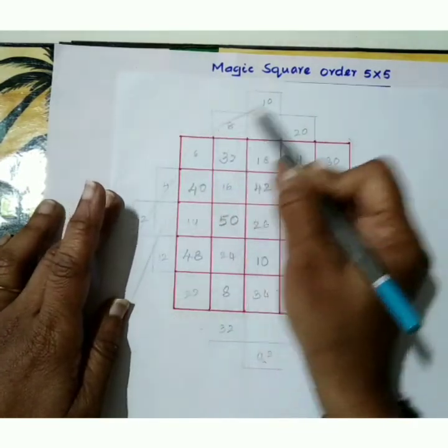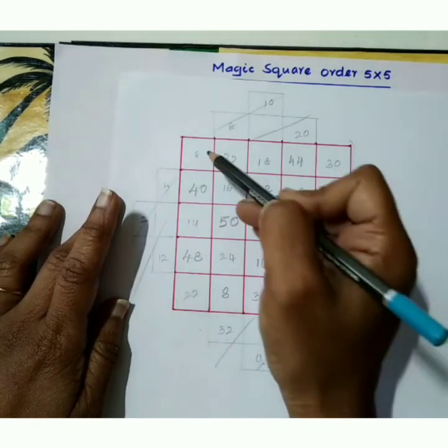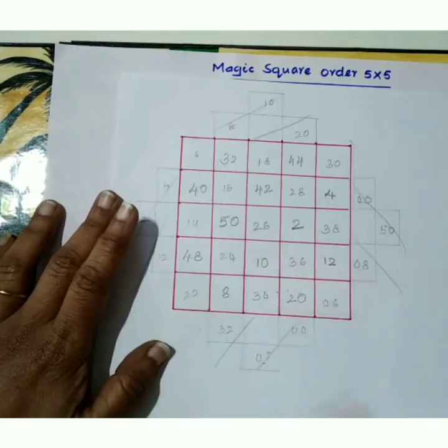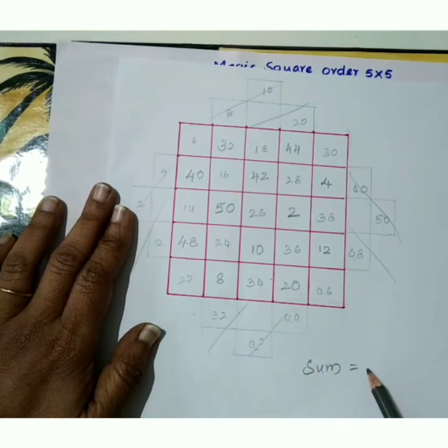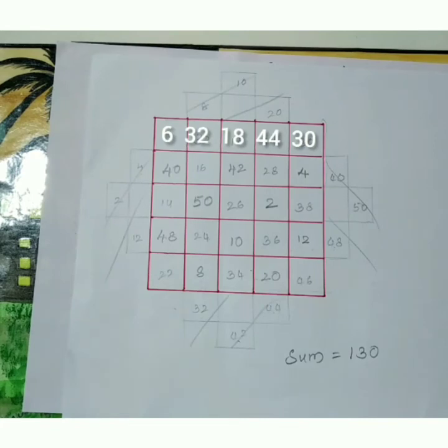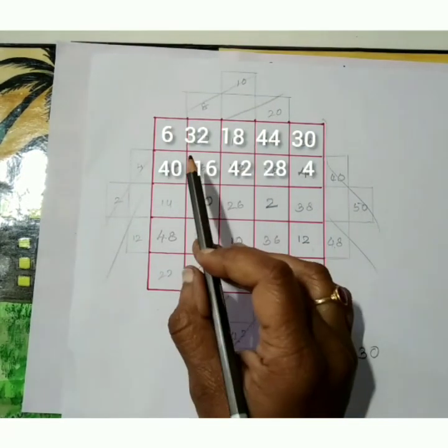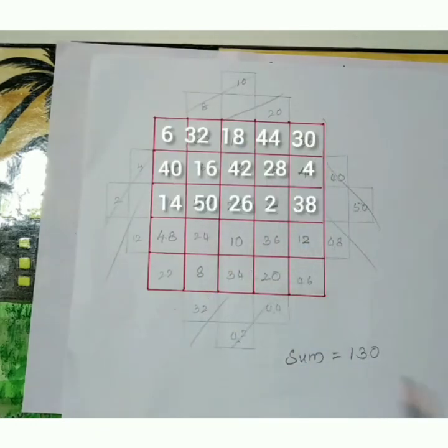Ignore this part. Now calculate row wise, column wise, or diagonal wise. We will get sum is equal to 130. So we can use any consecutive numbers. We will get after the calculation equal sum.